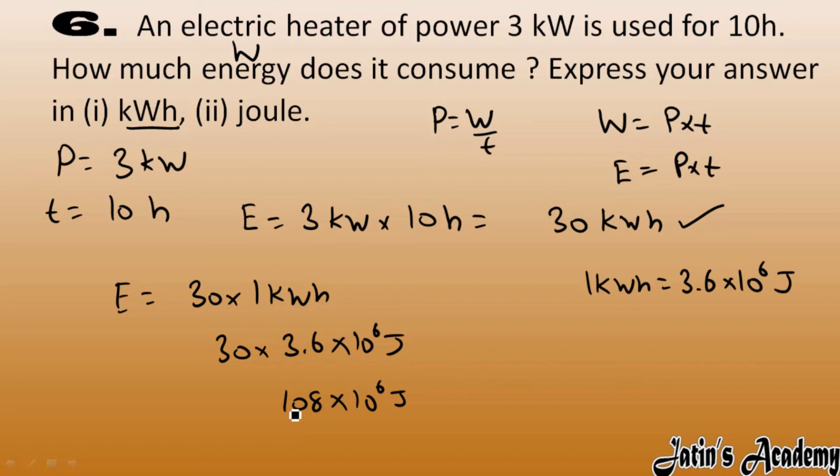Now in order to convert it into physics unit, physics unit means we have to put a decimal here, means after one digit we have to put a decimal. So divide it by 100 and multiply it with 100, so we got 1.08 into 10 raised to power 8 joule.